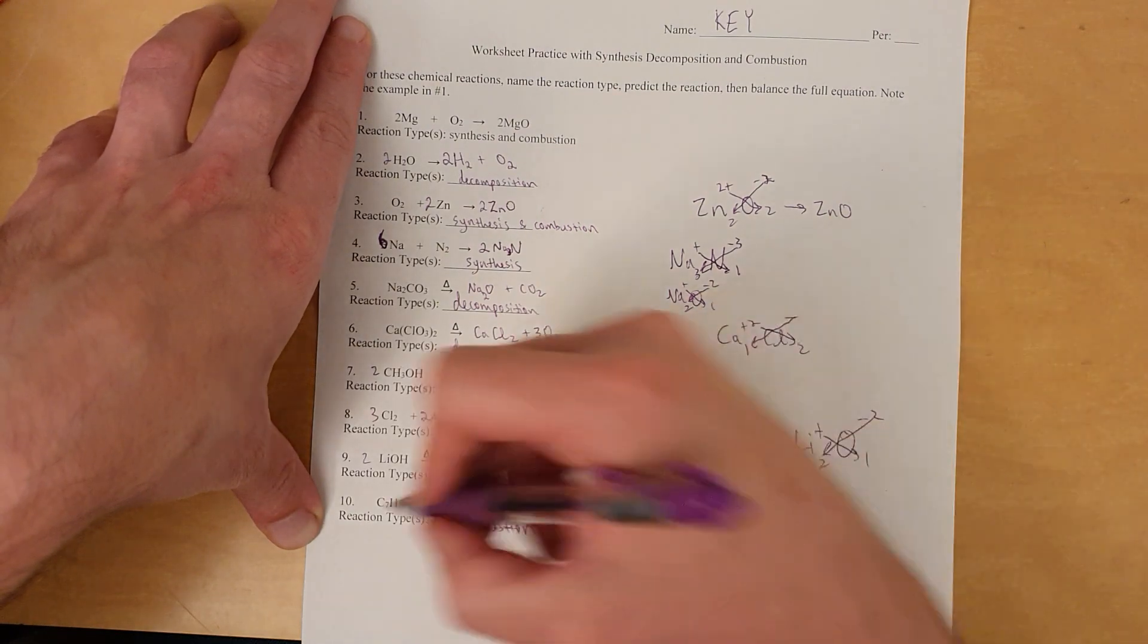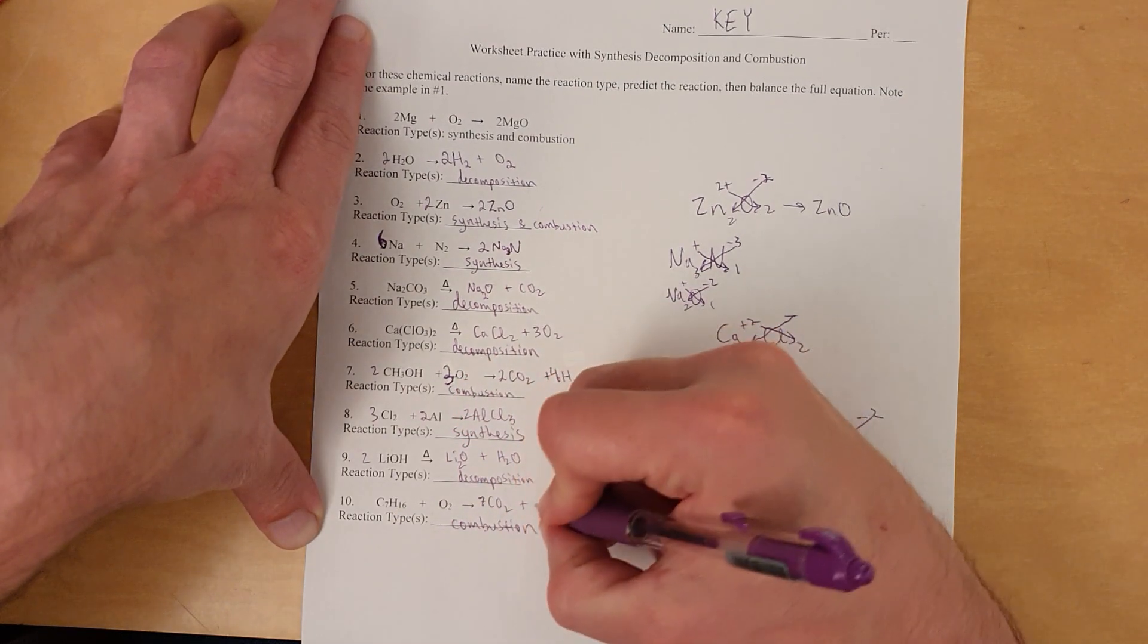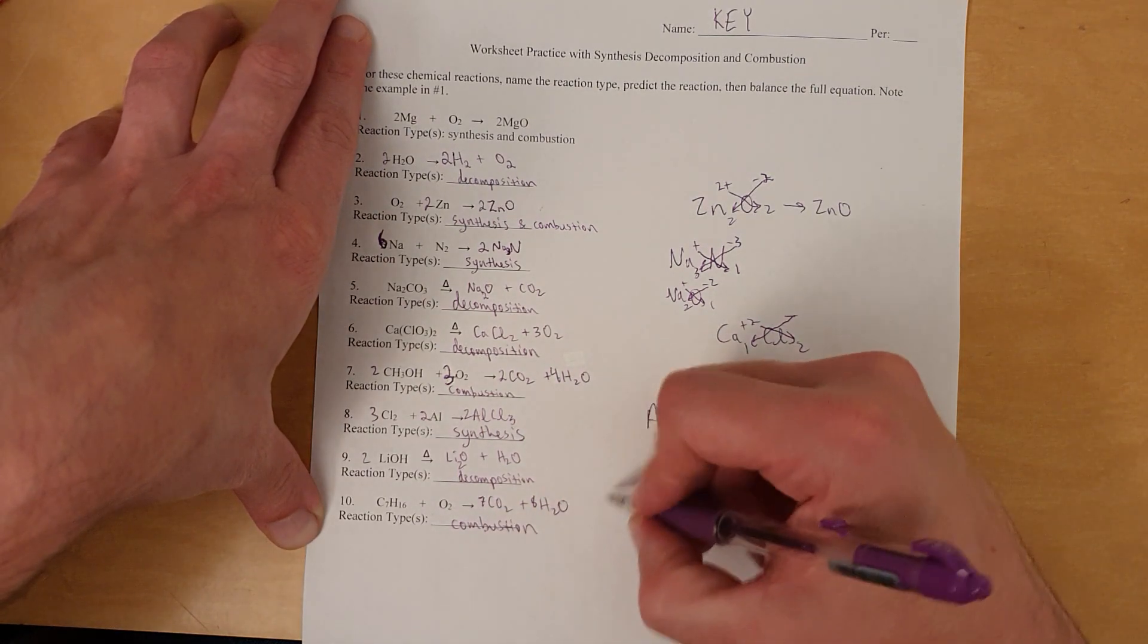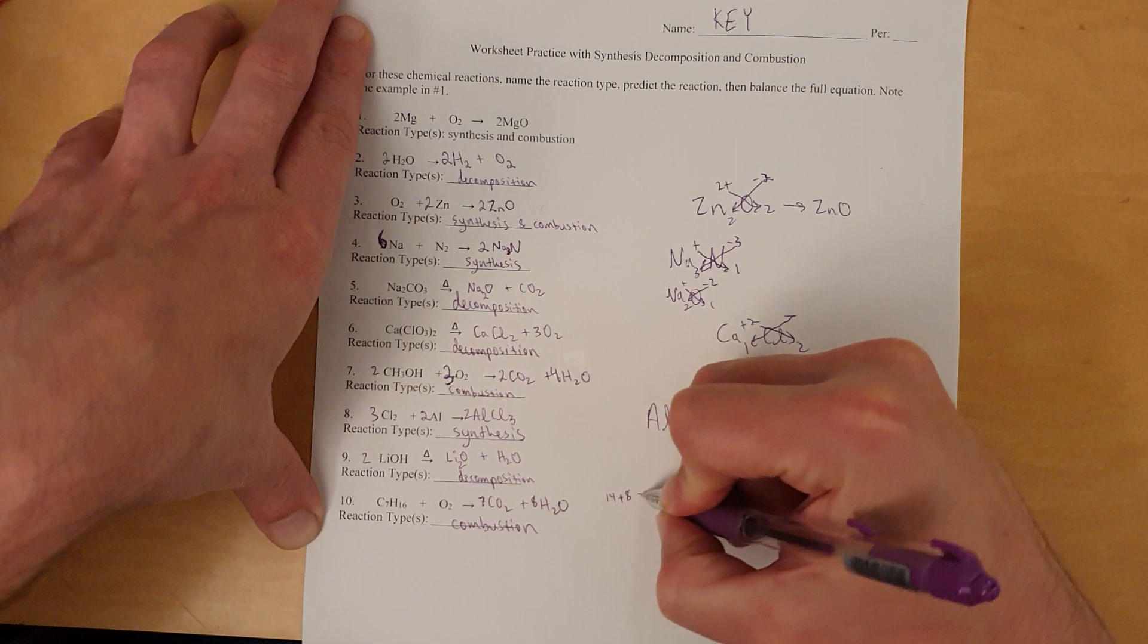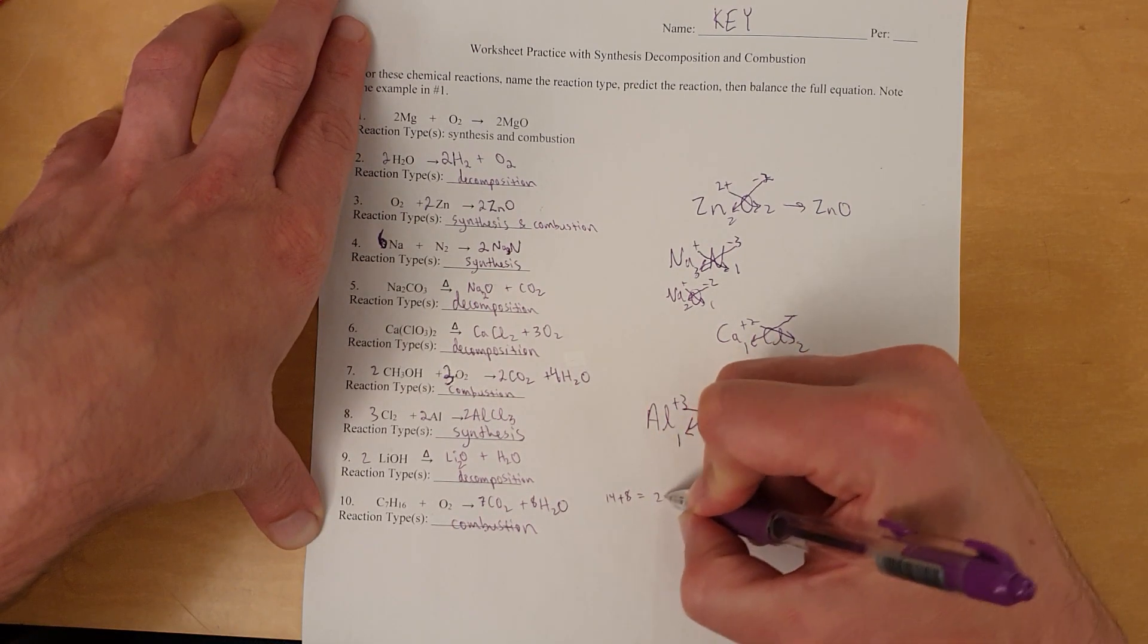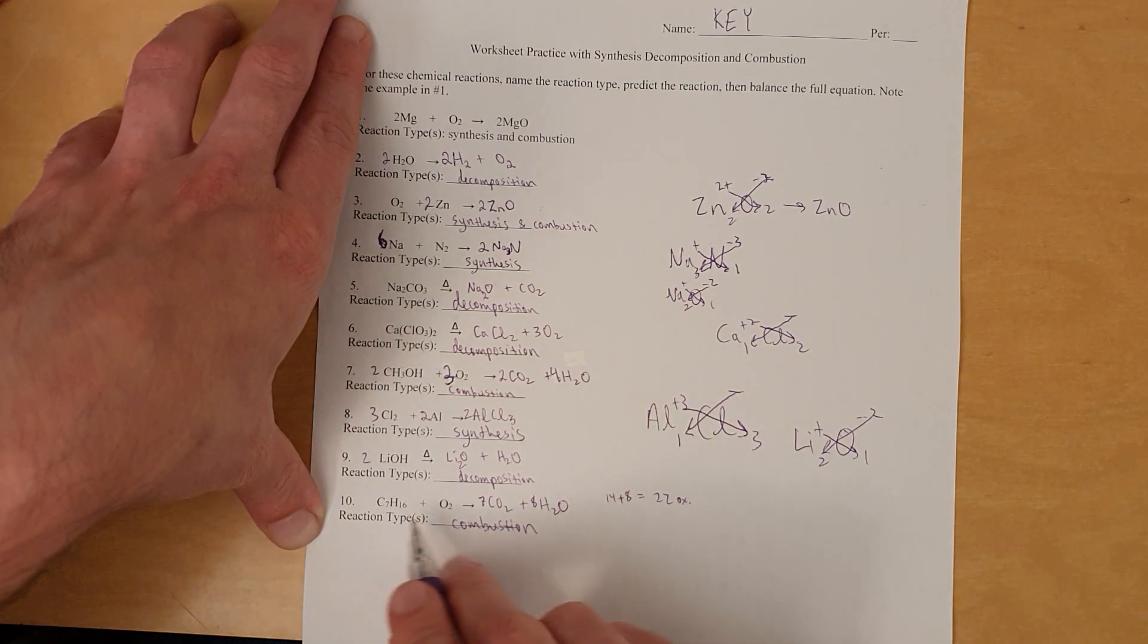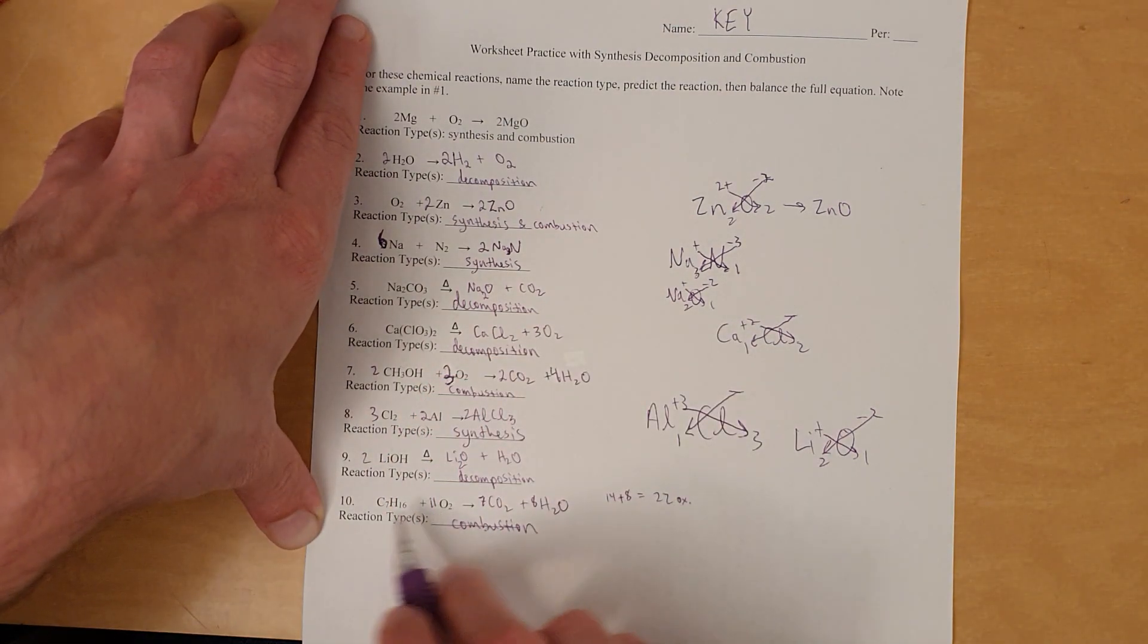So, alright. And we just go balance. 7 carbons. Got to balance that with 7 carbons. 16 hydrogens. Okay. I'll put an 8 here. That puts 16 hydrogens. Alright. So, this is 14 oxygens here, plus 8 oxygens here. 14 and 8 equals 22. Okay. So, that's 22 oxygens. So, we need to make 22 oxygens here. If I put an 11 in front of this, that does make 22 oxygens. So, let's check. 7 carbon, 7 carbon. 16 hydrogen, 16 hydrogen. 22 oxygen, 22 oxygen. We're good. That's it. All finished.